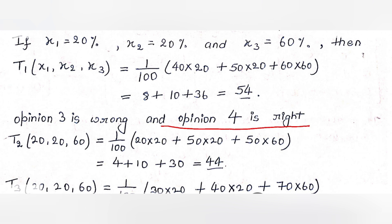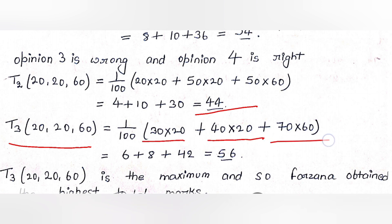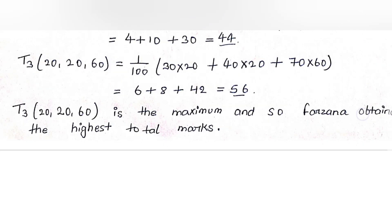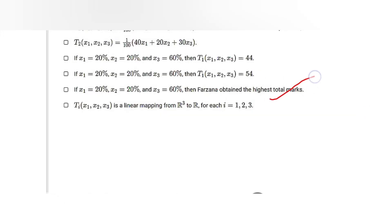For T2 with x1=20, x2=20, x3=60: T2 = (1/100)(20×20 + 50×20 + 50×60) = 44. For T3: T3 = (1/100)(30×20 + 40×20 + 70×60) = 56. So T1 = 54, T2 = 44, T3 = 56. Since T3 is the maximum, Farzana obtained the highest total marks of 56. This option is also correct.